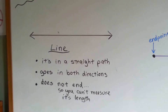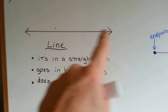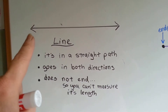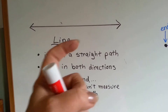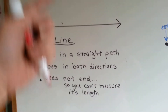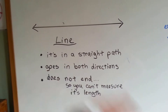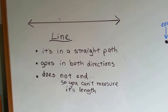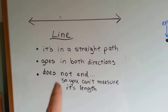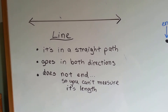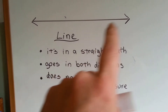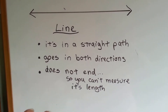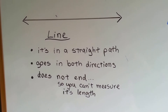A line is a straight path — very straight. It goes in both directions, to the left and to the right. A line could go up or down, sideways. As long as it's in a straight line and it goes in both directions, it does not end, so you cannot measure its length. The arrows indicate that it keeps going and going and going. It could wrap around the earth. There's no end to it, so you can't measure it.